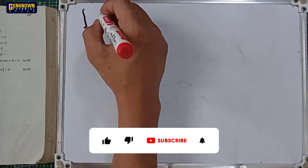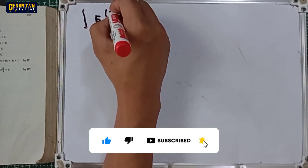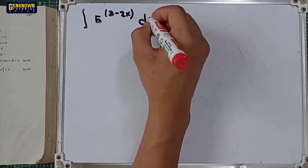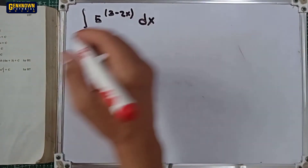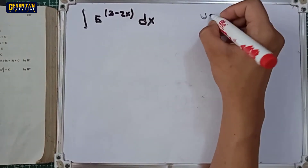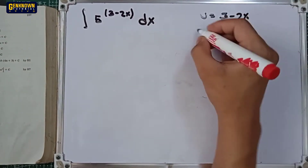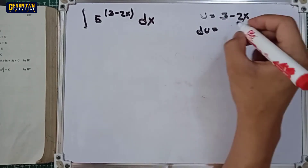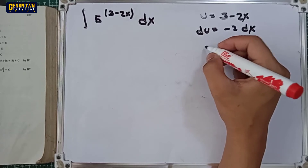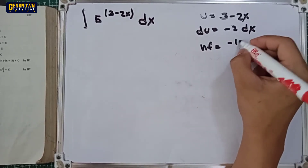The integral of 5 raised to 3 minus 2x dx. Let u be equal to the exponent, so u = 3 minus 2x. The neutralizing factor (NF) is equal to negative 1 over 2.